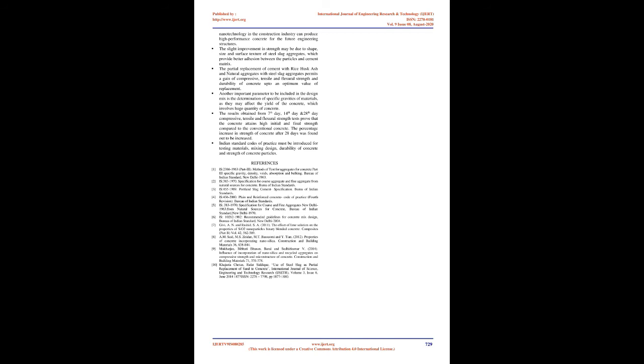3.8 Split Tensile Strength: Split tensile strength is obtained by applying crushing load on the cylinder surface. Split tensile strength of concrete is calculated by casting 150 mm diameter and 300 mm long cylinders. Test results are presented for split tensile strength at 7, 14 days, and 28 days of testing.